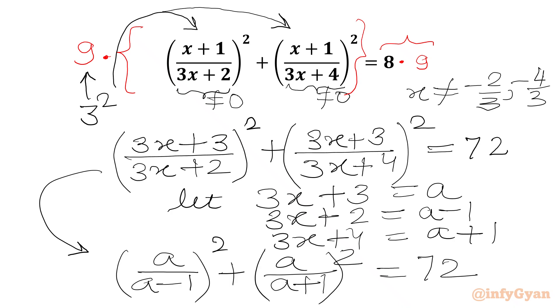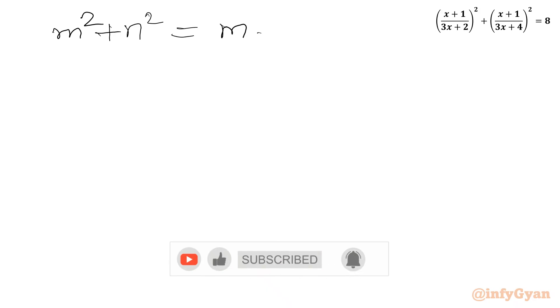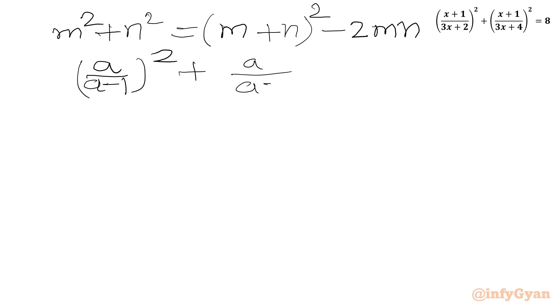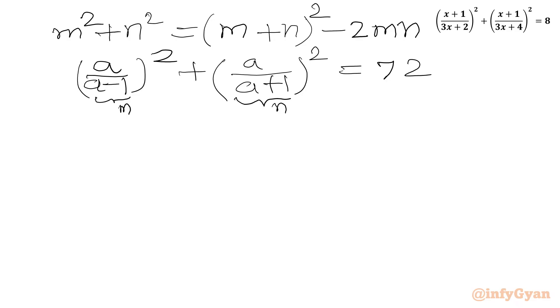Now we are going to use an algebraic identity. We have m squared plus n squared equals (m plus n) whole squared minus 2mn. So we have to subtract 2mn from the (m plus n) squared expression to get m squared plus n squared. We consider a over (a minus 1) as m and a over (a plus 1) as n as per our formula.